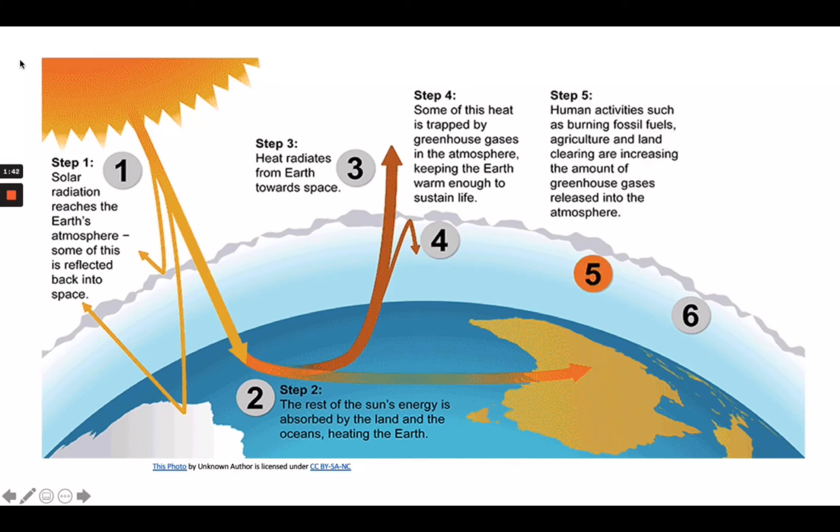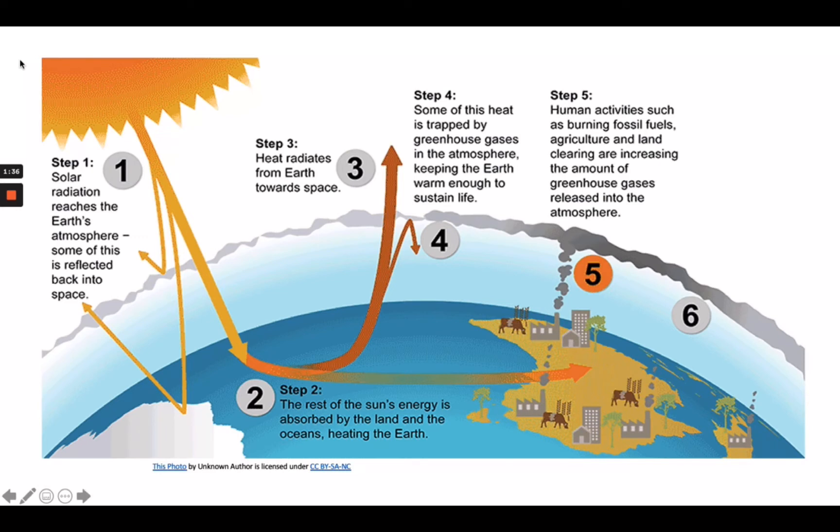Next is human activities such as burning fossil fuels, agriculture, and land clearing are increasing the amount of greenhouse gases released into the atmosphere. And lastly, this is trapping extra heat and causing the Earth's temperature to rise, known as global warming.